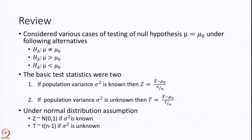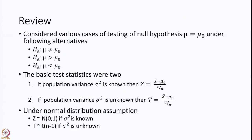If we review it quickly, what we have seen is we have tested the null hypothesis if the population is normal with mean mu and variance sigma square, and then we have tested the hypothesis that mu is equal to some given value mu naught against three alternatives: the two-sided alternative that mu is not equal to mu naught, mu is greater than mu naught, or mu is less than mu naught. In both cases, we found that if the population variance sigma square is known, then it reduces to testing a hypothesis using a test statistic Z, which is a standard normal variate.